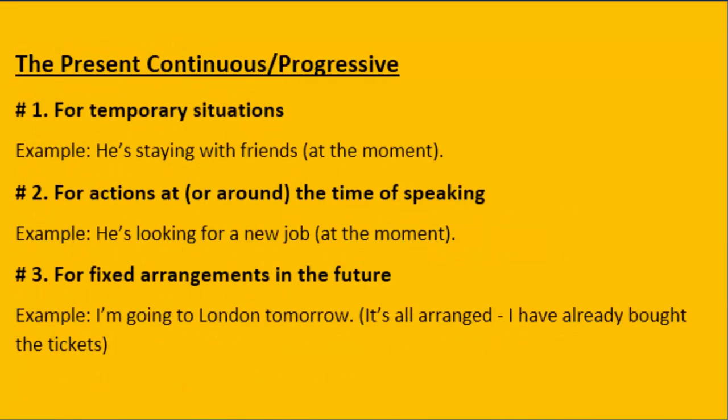The next tense is present continuous, or present progressive. The first use of present continuous is for temporary situations. For permanent situations we use present simple, and for temporary situations we use present continuous. A temporary situation is any situation or action that is going on for a limited time and you know it has to change after some time because it is not permanent.